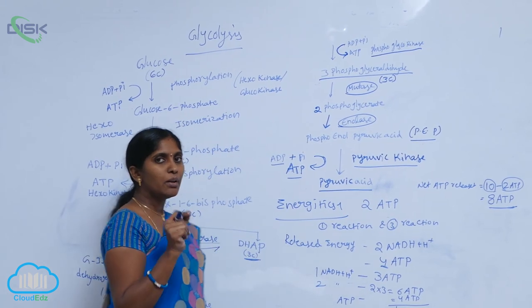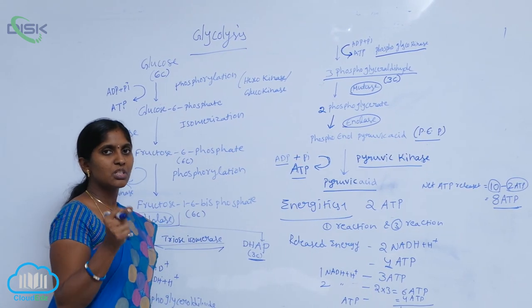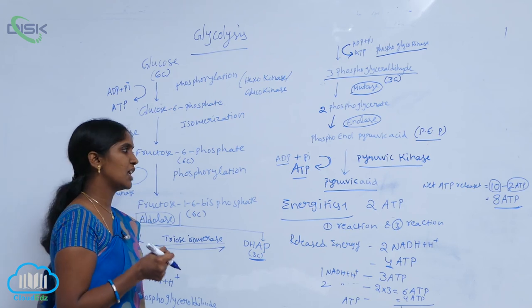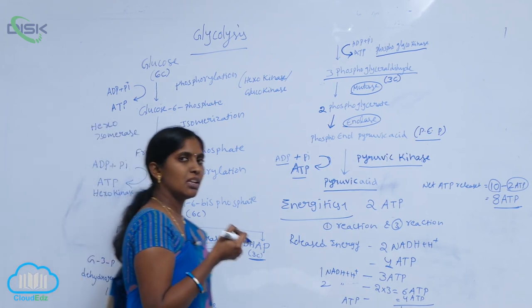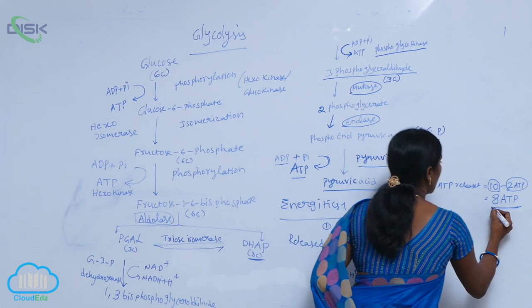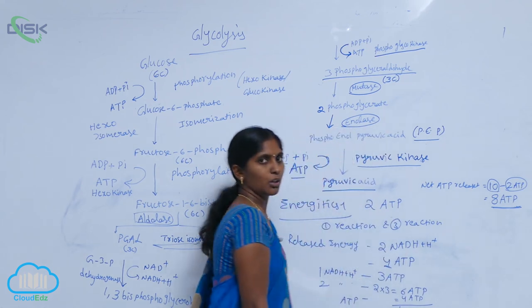So, 1 molecule of glucose involved in the glycolysis reaction results in the production of 8 ATP molecules.